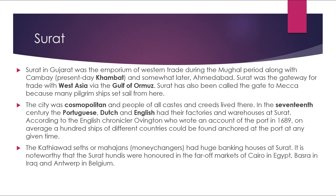Surat in Gujarat was an emporium of western trade during the Mughal period, along with Khambhat and somewhat later Ahmedabad. Surat was the gateway for trade with West Asia via the Gulf of Ormuz and has been called the gate to Mecca because many pilgrim ships sailed from here. The city was cosmopolitan and people of all castes and creeds lived there. In the 17th century, the Portuguese, Dutch and English had factories and warehouses at Surat. According to the English chronicler Owen Gittan, who wrote an account of the port in 1689, on average 100 ships of different countries could be found anchored at the port at any given time. The Kathiawad states' Mahajans — the money changers — had huge banking houses at Surat. Notably, Surat hundis were honoured in the far-off markets of Cairo in Egypt, Basra in Iraq and Antwerp in Belgium.